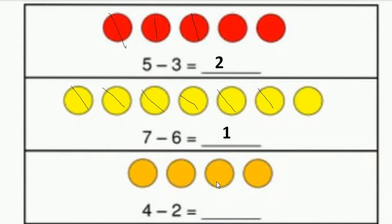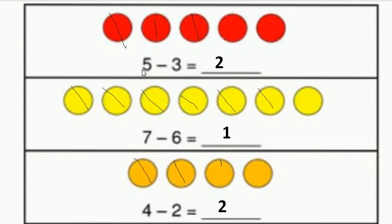There are 4 objects. Our sum is 4 minus 2, so we have to cut or reduce 2 objects among the given 4. After crossing out 1 and 2, see how many objects are remaining — there remain 2 objects. So we write 2 in the answer box.